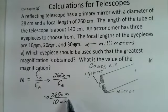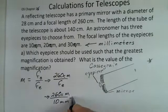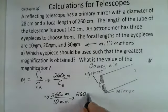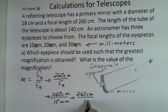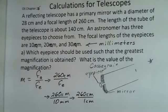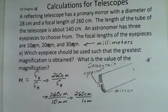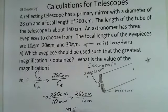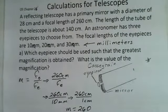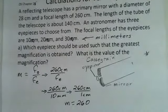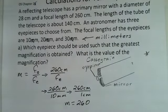We need the same units, so let's convert. 260 centimeters—1 centimeter equals 10 millimeters—gives us 2600 millimeters divided by 10 millimeters. The magnification is 260, or 260 power. You'd need a very clear, steady atmosphere to successfully use that. It's fairly high magnification.